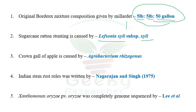The third question: crown gall of apple — and not only apple but also stone fruits — is caused by Agrobacterium tumefaciens. The new name of Agrobacterium is Rhizobium radiobacter. Based on the options, we may also see Agrobacterium rhizogenes. The causal organism is Agrobacterium tumefaciens and the new name is Rhizobium radiobacter.